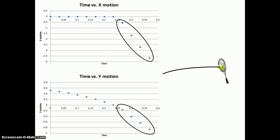This animation shows the path of the tennis ball after being hit by the racket. On the graphs, you can see the ball moves rapidly in the negative x direction and continues to fall in the y direction due to gravity.